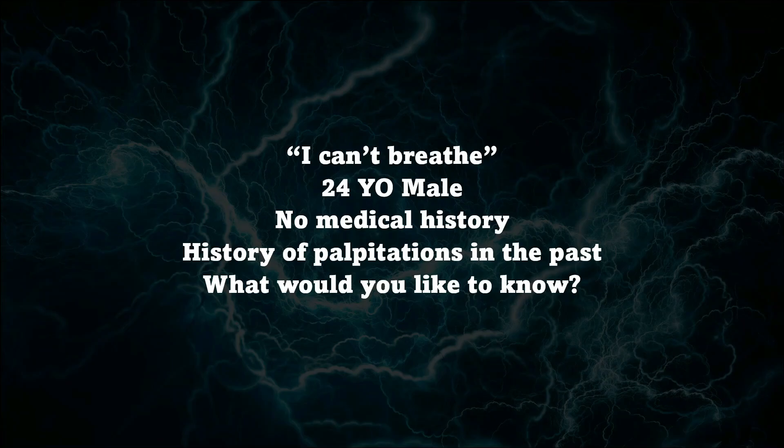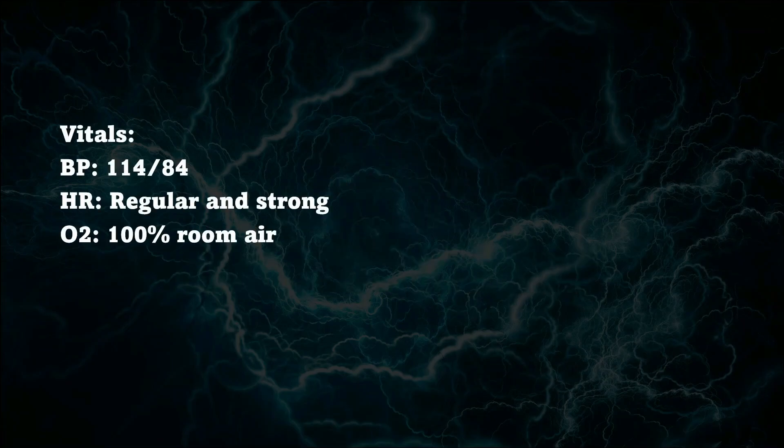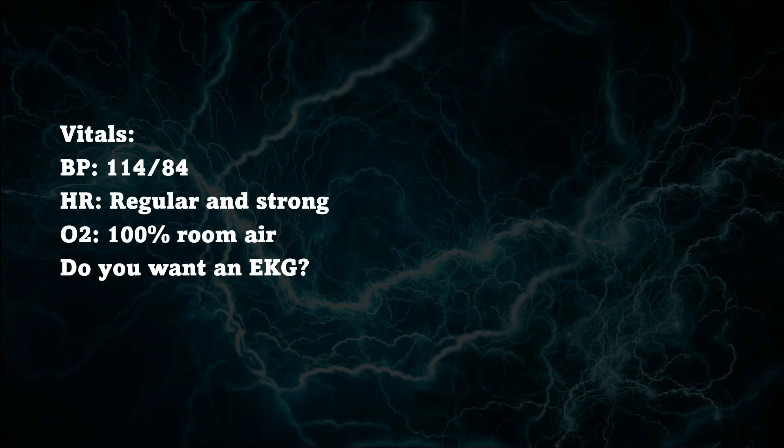If you've been following this series, you know that we always get vitals on these patients. You have a patient with a blood pressure of 114 over 84. Heart rate is regular and strong. O2 sat is 100% on room air. Would you like to get an EKG on this patient? I would absolutely love to get an EKG on this patient. Yes, they're very young, but that doesn't mean they can't have any kind of cardiac issues. And as of right now, all their vitals are completely normal.